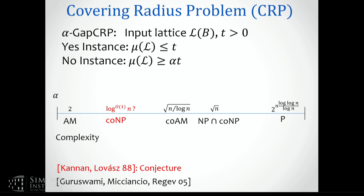Combining many known results as well as some new results, they showed the following range of approximation factors: if you don't mind a 2-to-the-n approximation, you can approximate the covering radius in polynomial time. If you don't mind a root-n approximation, there are certificates both that the covering radius is large and that it's small — the covering radius being small can be certified by a short basis of the lattice.